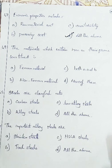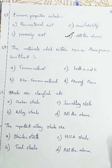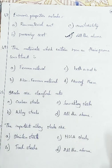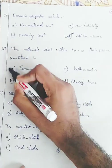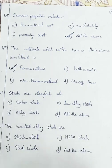Question number 48: the materials which contain iron as a prime constituent is called — Option A: ferrous materials, Option B: non-ferrous materials, Option C: both A and B, Option D: none of these. The materials having iron as a prime constituent are called ferrous materials. So we are going with Option A, ferrous material.